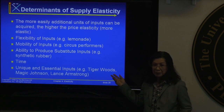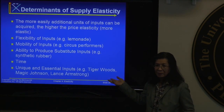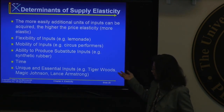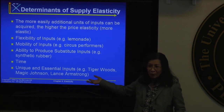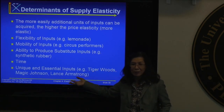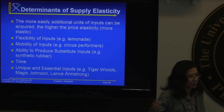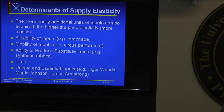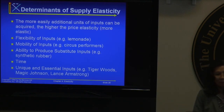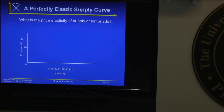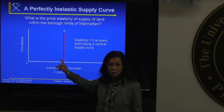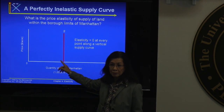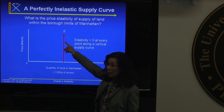The last determinant is unique essential inputs — talent. For example, Magic Johnson or Michael Jordan have unique talent. Their supply is fixed — there is only one of them in the world. The price can go up or down, but their talent is fixed. Endorsements from companies like Nike will pay more and more, but the supply of that talent remains perfectly inelastic.